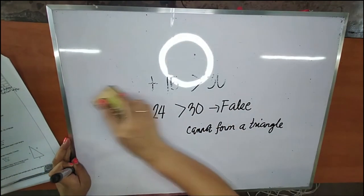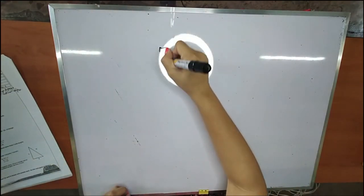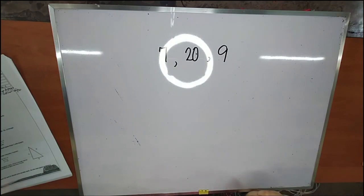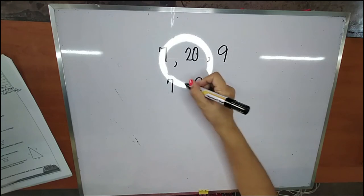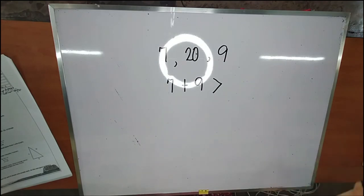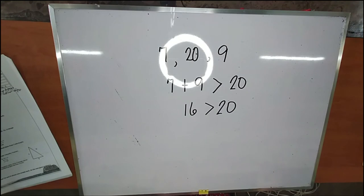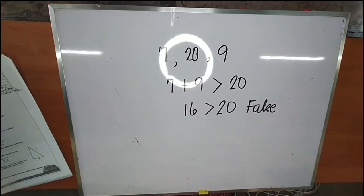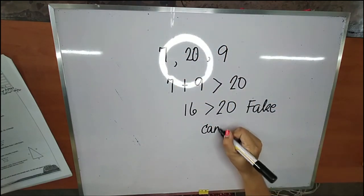Applying the shortcut to our previous example of 7, 20, and 9: the two shorter sides are 7 and 9. Add them: 7 plus 9 equals 16. Is 16 greater than 20? Obviously not — therefore this statement is false, and sides 7, 9, and 20 cannot form a triangle.